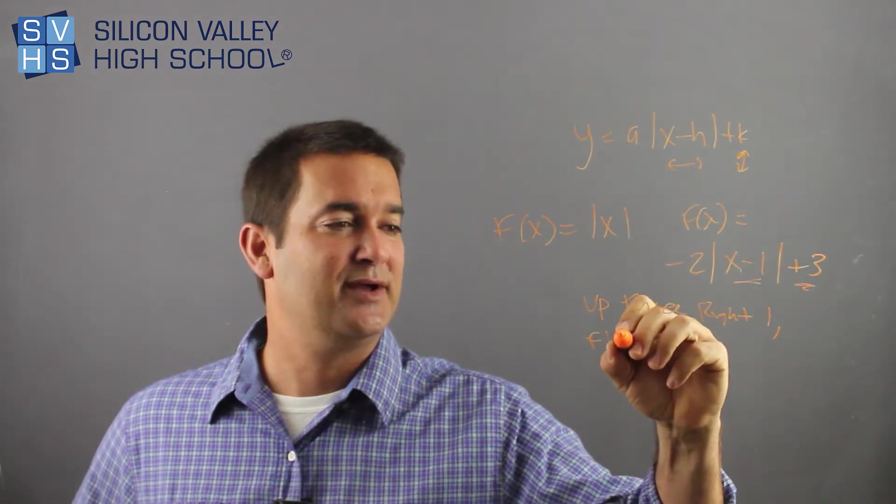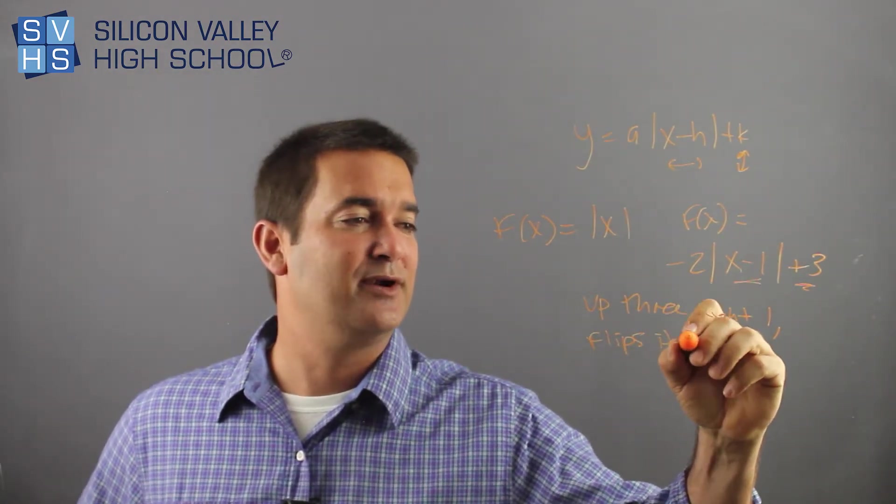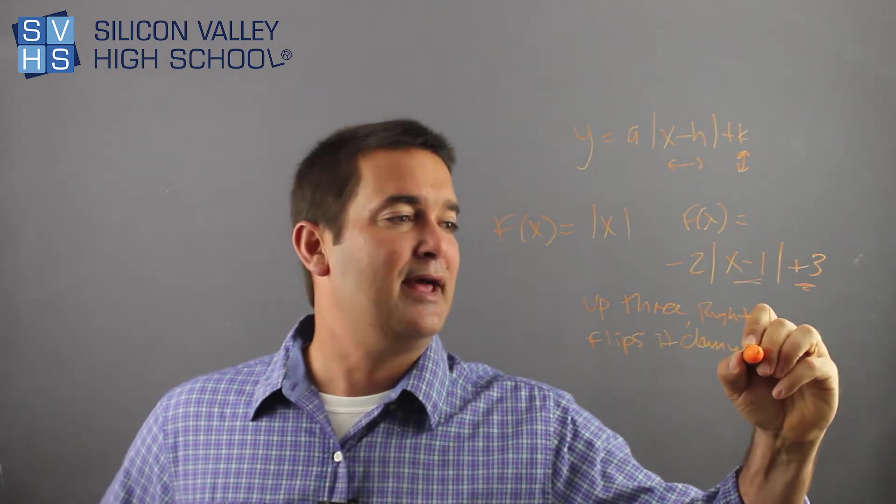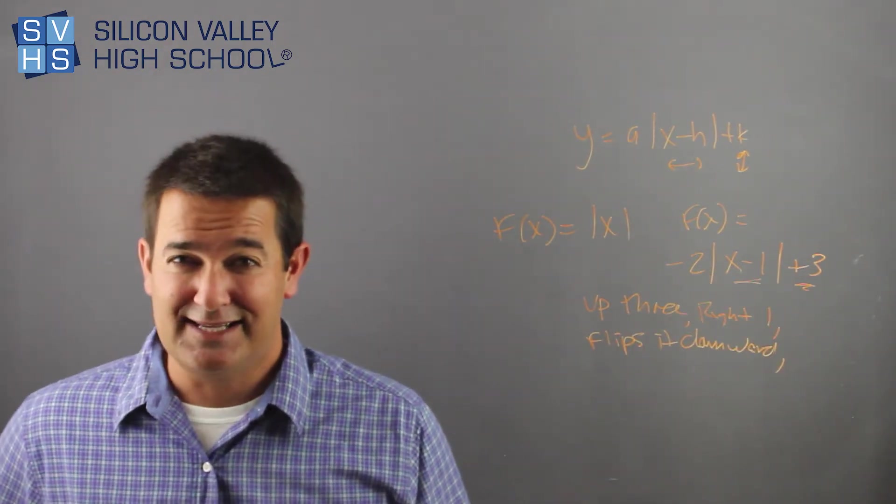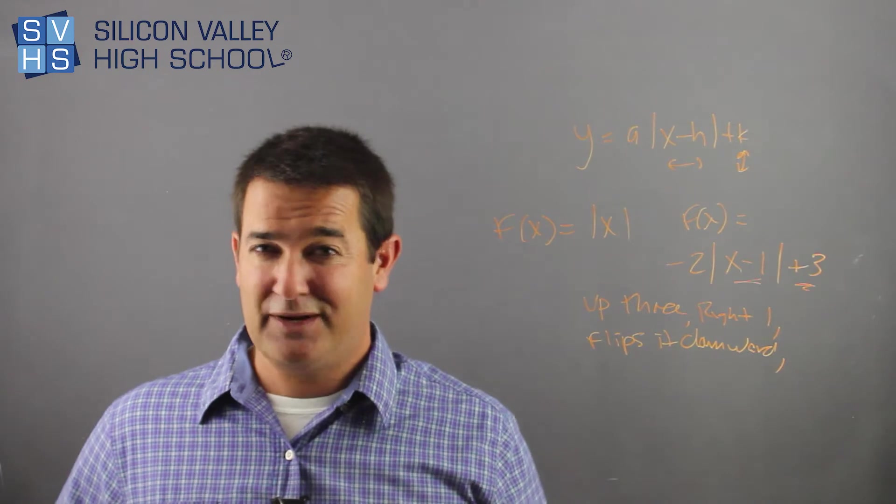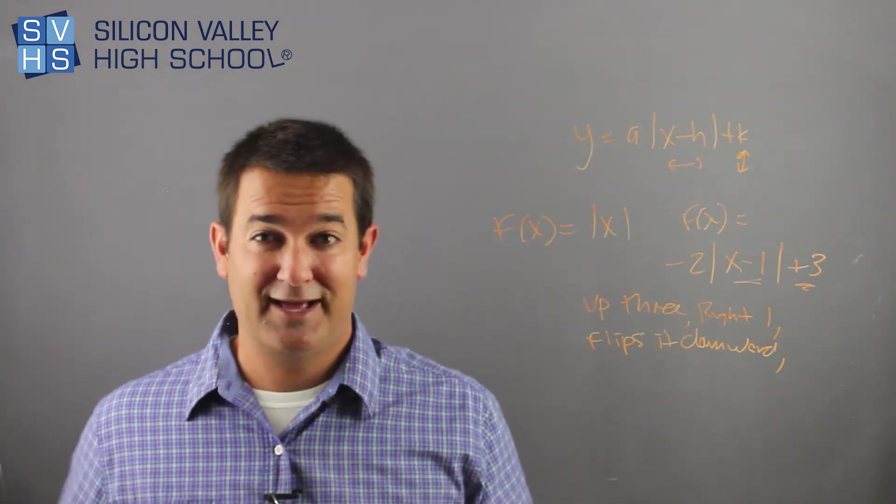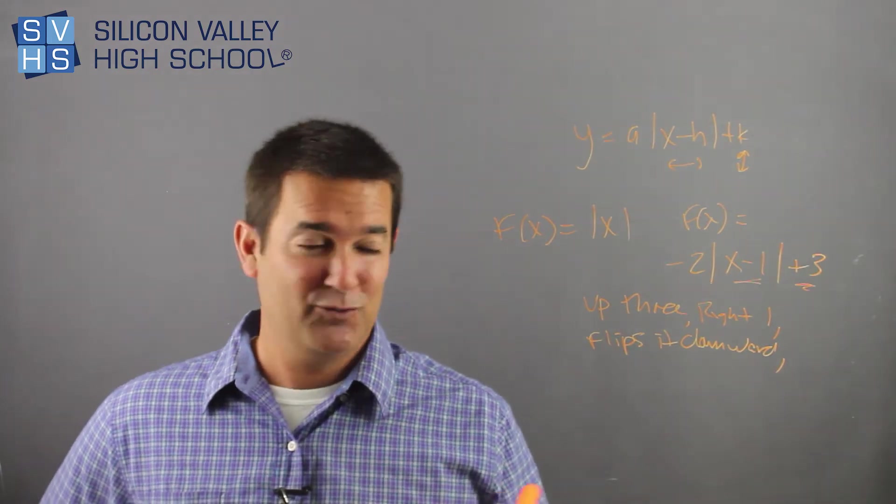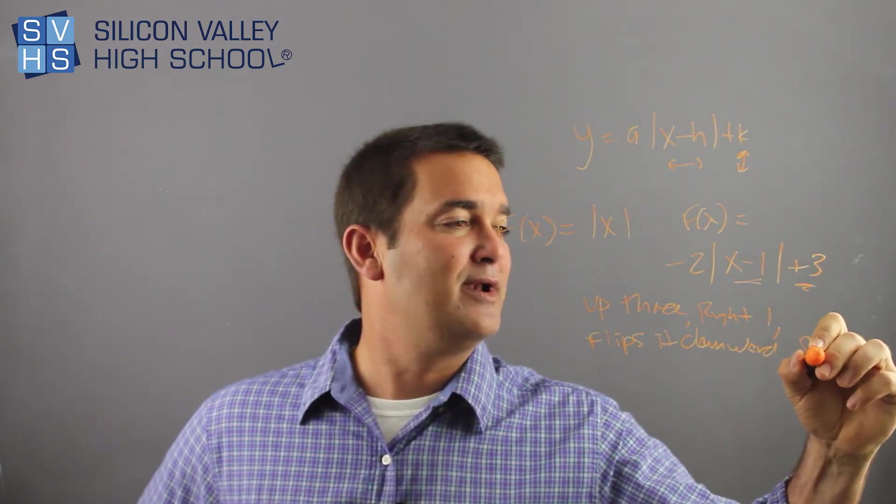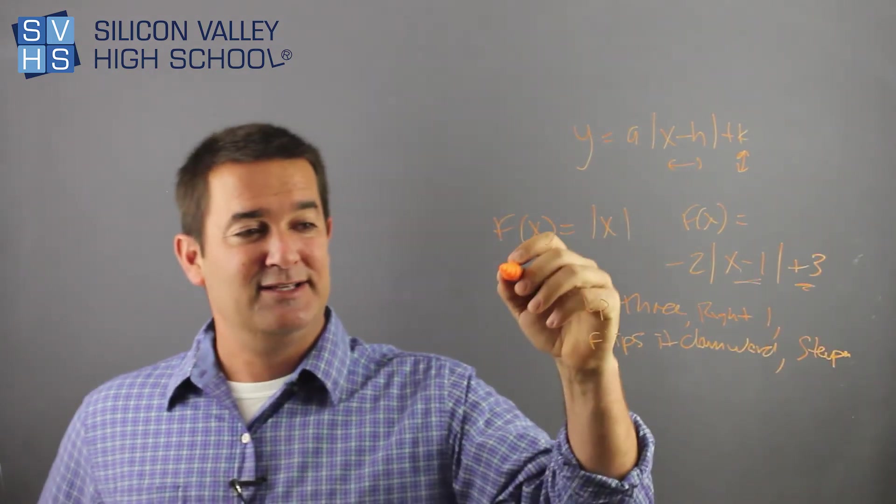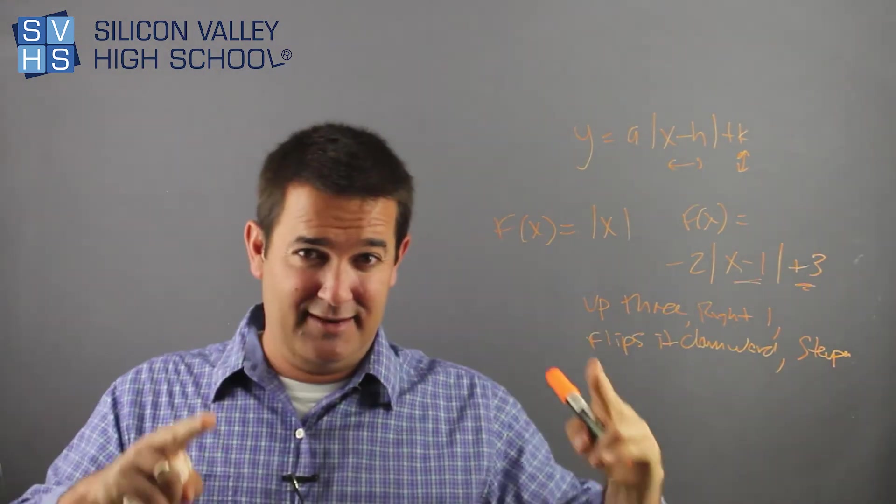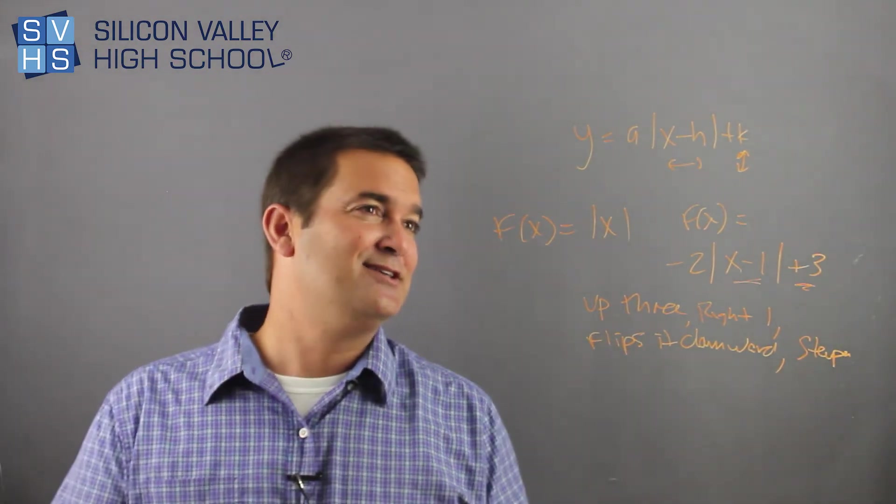First of all, it flips it. So I know the negative flips it downward, okay. And also, does it get steeper or less steep? Is 2 a big number? Is it bigger than 1 or is it less than 1? Because 2 is bigger than 1, I'll call that relatively a big number compared to 1, so it gets more narrow or more steeper. So we would flip down and it would get a little steeper. So that's it.